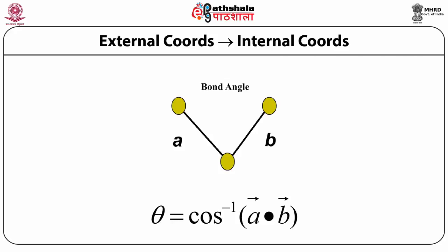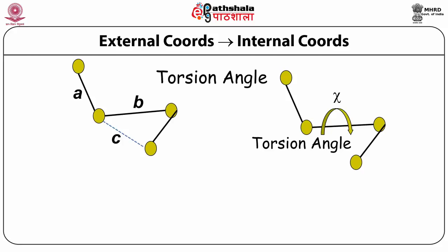For bond angles: given three connected atoms, I can define each bond using vectors a and b. The bond angle is the angle between these two vectors, given by the inverse cosine of their dot product. The dot product is simple to calculate and finding the inverse cosine is fairly easy. So given external coordinates x1y1z1, x2y2z2, x3y3z3, one can calculate the two vectors and from them obtain the bond angle — external coordinates can be completely converted into the relevant bond angles.